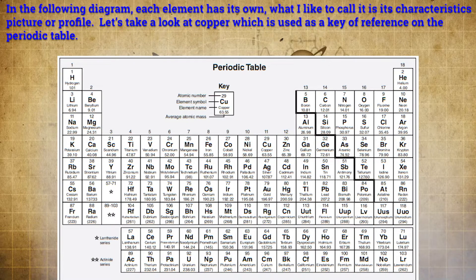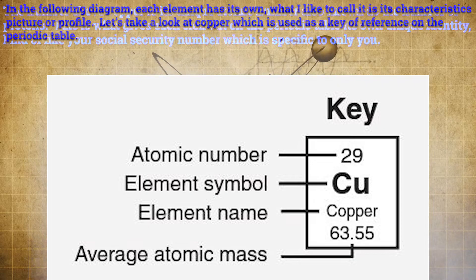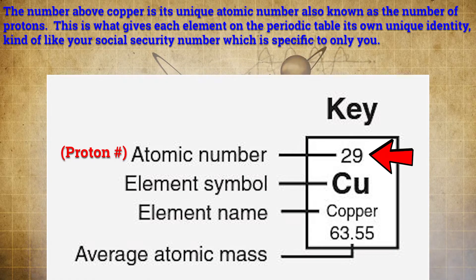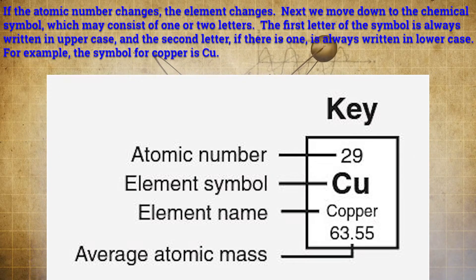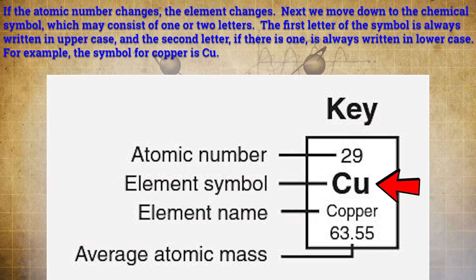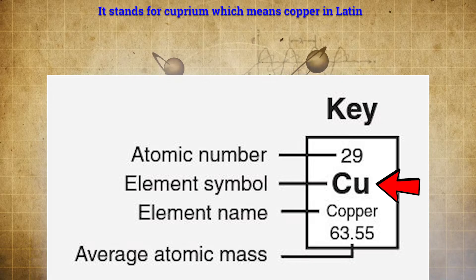Now let's figure out the basics of reading the periodic table to help us develop atomic level models. In the following diagram, each element has its own, what I like to call it, its characteristic picture or profile. Let's take a look at copper, which is used as a key reference on the periodic table. The number above copper is its unique atomic number, also known as the number of protons. This is what gives each element on the periodic table its own unique identity, kind of like your social security number, which is specific to only you. If the atomic number changes, the element changes. Next, we move down to the chemical symbol, which may consist of one or two letters. The first letter of the symbol is always written in uppercase, and the second letter, if there is one, is always written in lowercase. For example, the symbol for copper is capital C, lowercase U. It stands for cuprium, which is the Latin word for copper.